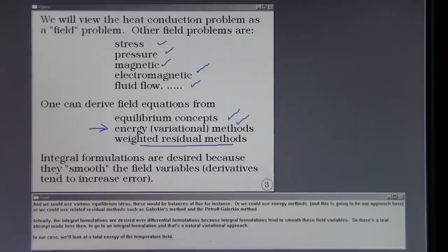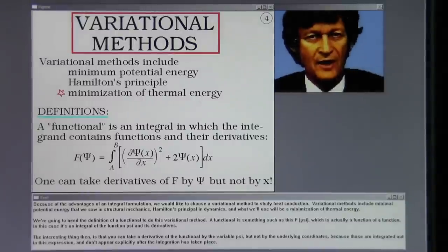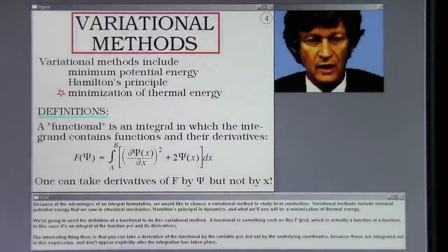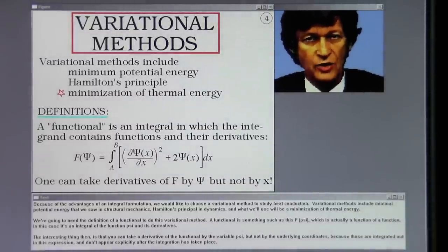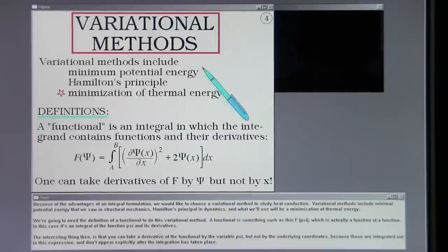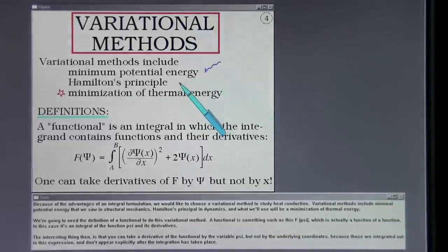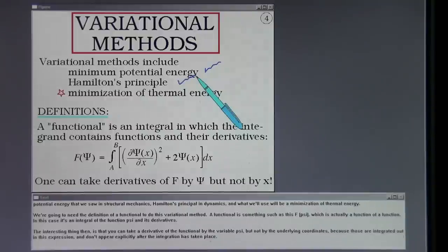In our case, we'll look at the total energy of the temperature field. Because of the advantages of an integral formulation, we would like to choose a variational method to study heat conduction. Variational methods include minimum potential energy from structural mechanics, Hamilton's principle in dynamics, and what we'll use here: a minimization of thermal energy.